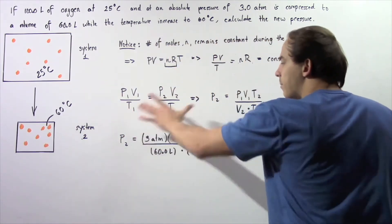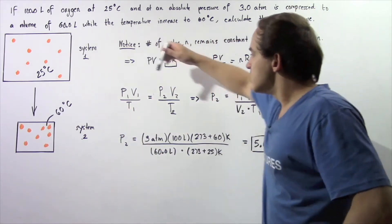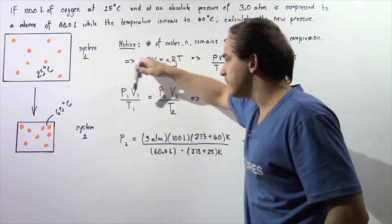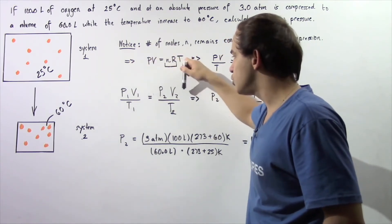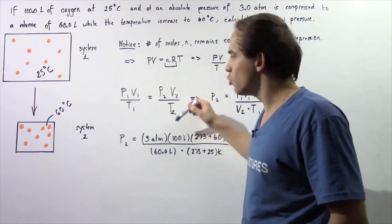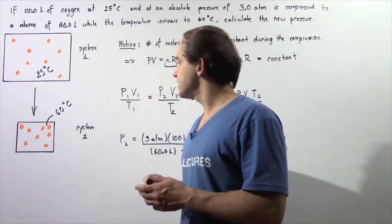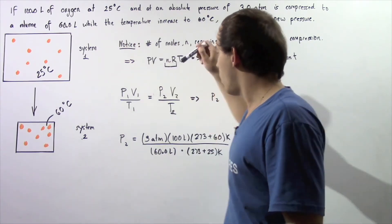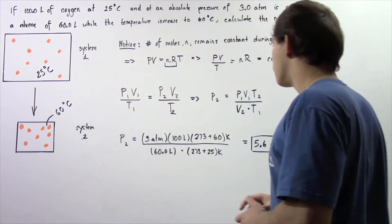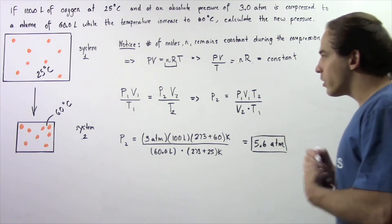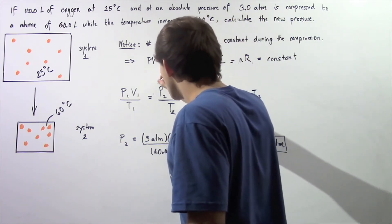That is described by the following equation: P1 V1 divided by T1 is equal to P2 V2 divided by T2, where this number simply represents the number of the system. So one is system number one and two is system number two. What we want to solve for is P2.